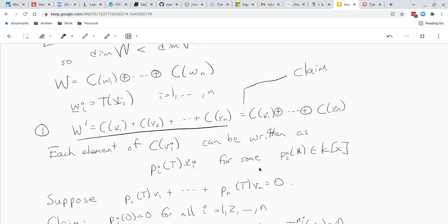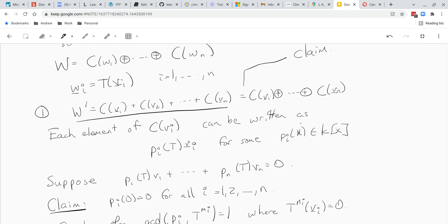And we have to show that we have a direct sum. So we're going to suppose that P1 of T of V1 plus P2 of T of V2 plus Pn of T of Vn equals zero. And our goal is to show that each term is zero. And that will show us that this sum is a direct sum, kind of like showing linear independence.